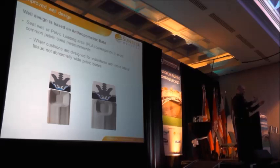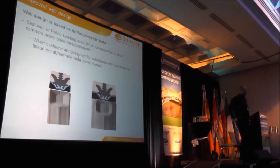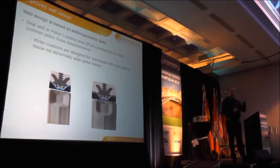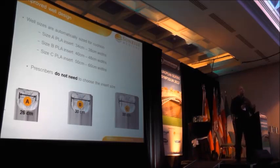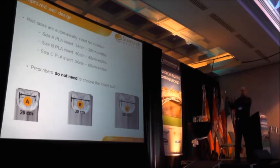Someone 26 inches wide will also share that same pelvic loading area; the growth is in the lateral tissue at the sides. In 5% of cases, it will be due to abnormal bone growth, and that's accepted. So with the J Balanced Cushion, there are three pelvic sizes — the pelvic loading areas — and they are automatically determined on the order form, meaning that in 95% of cases, that well size is going to work well for the client.